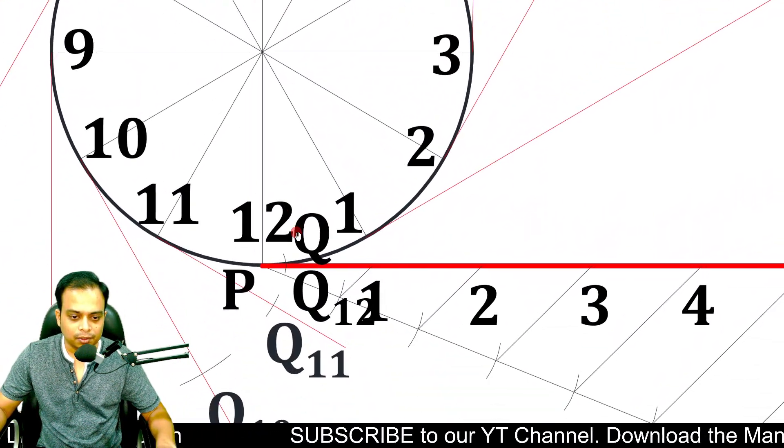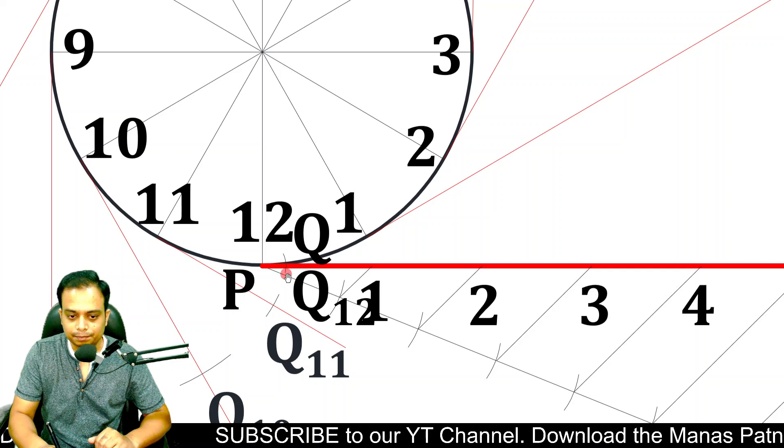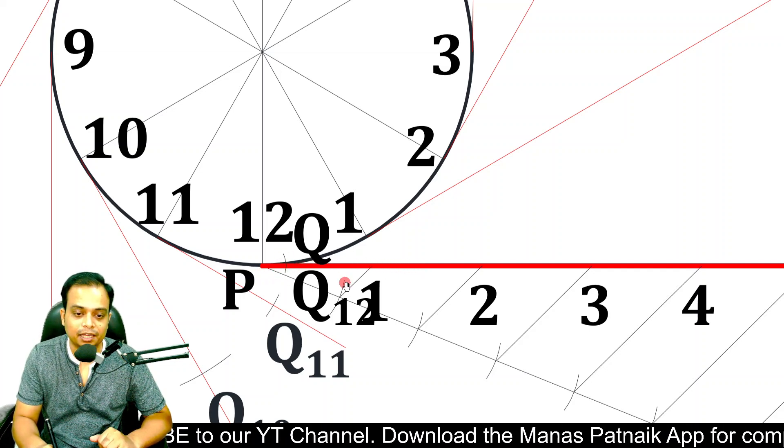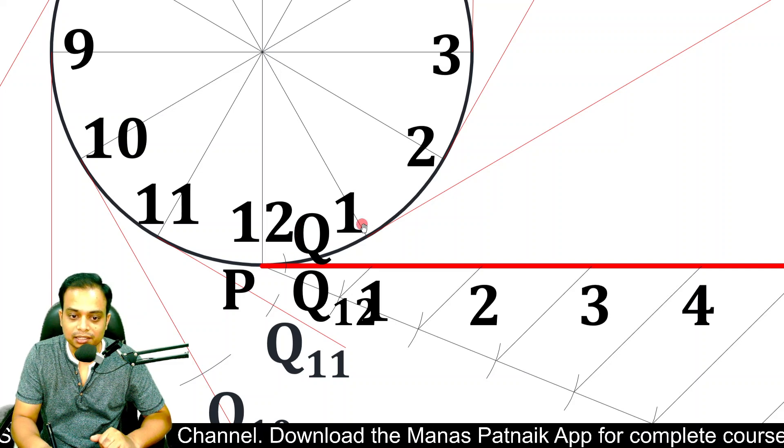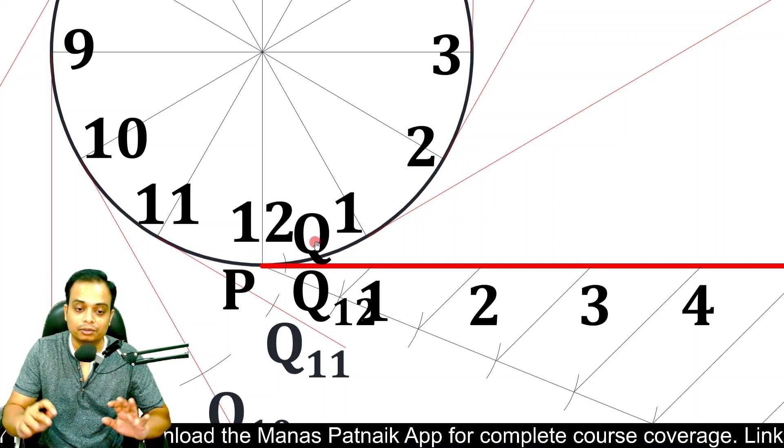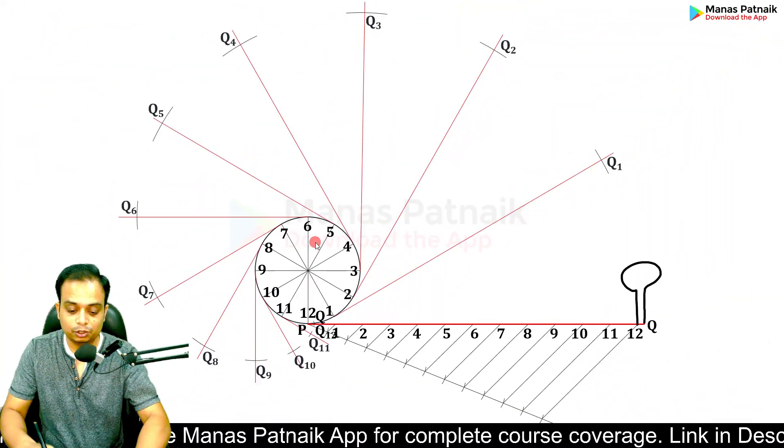Once again let me zoom into this. If you watch carefully, this arc where it cuts on this red line gives rise to Q12. Where it cuts on the circle's circumference gives rise to end point Q. These are the final two points. Join all of these points in proper sequence.